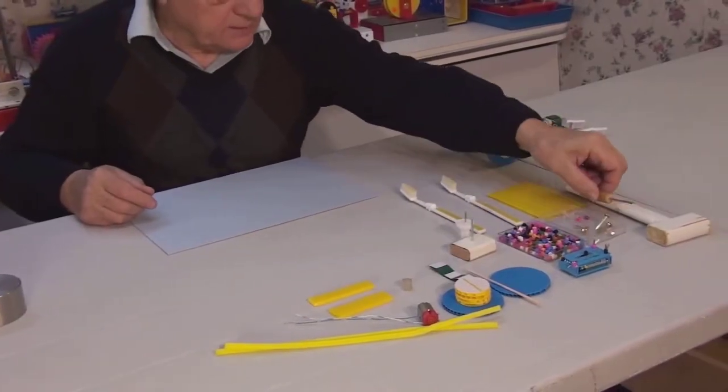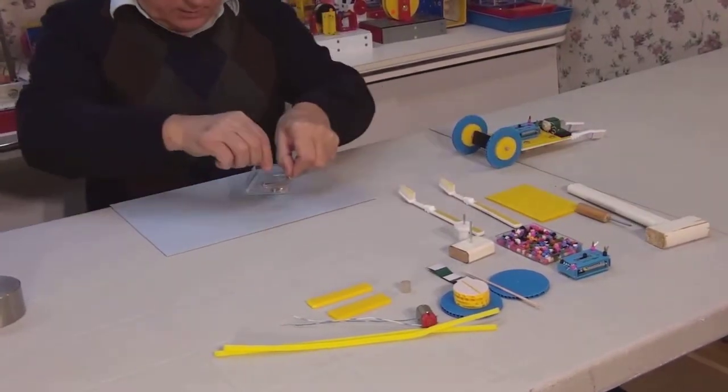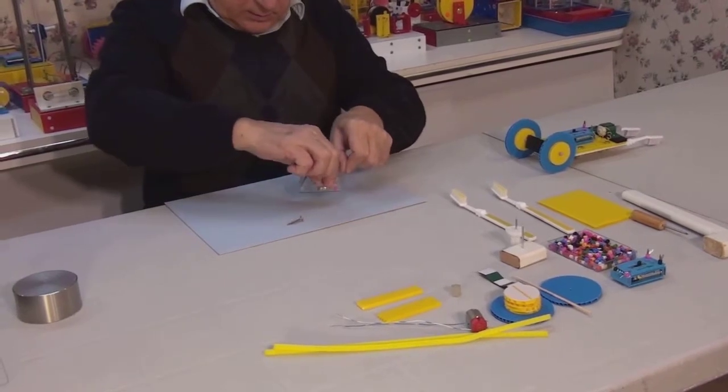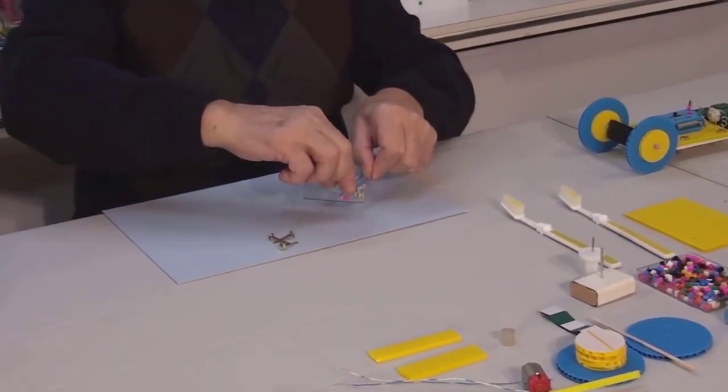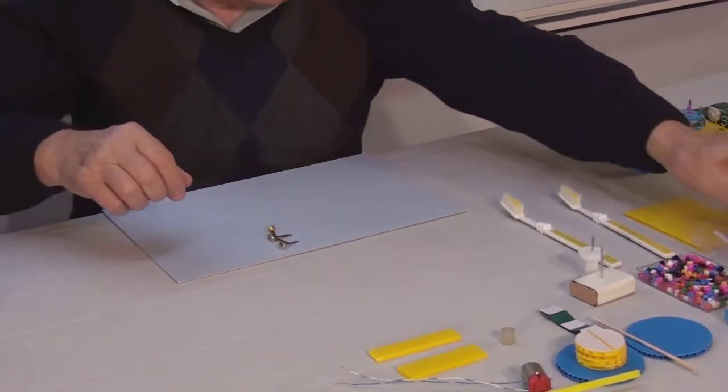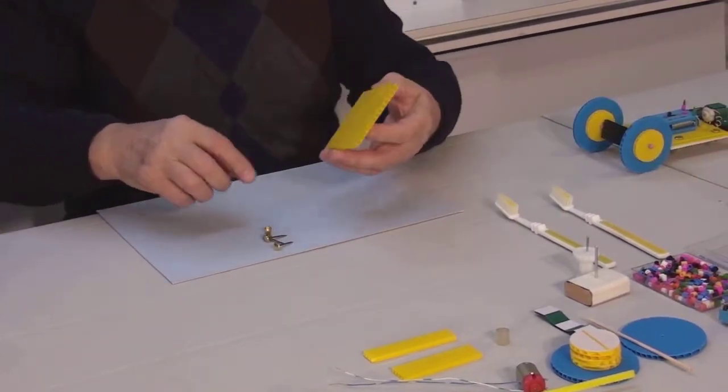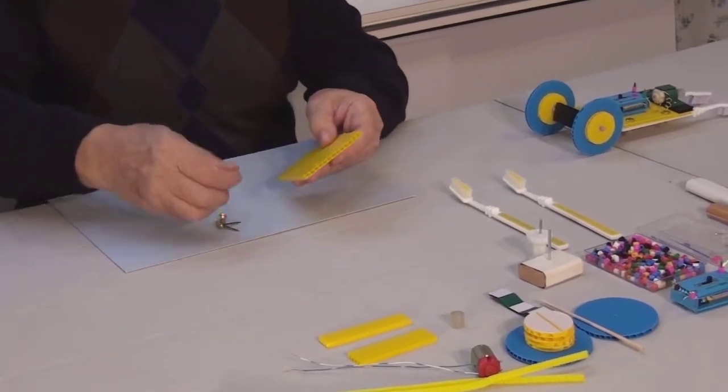First, we'll take the four paper fasteners and the base. Insert them into the four pre-drilled holes on the base.